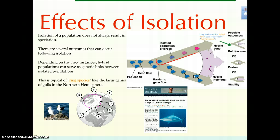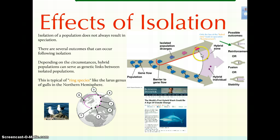If barriers, be they geographic or otherwise, begin to diminish and the hybrids do particularly well, then the two separated populations can begin to interbreed more and more frequently until they again sort of fuse back into one original population. That's what we look at with fusion.